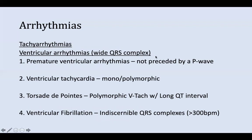Ventricular arrhythmias cause a wide QRS complex. We have four types. Premature ventricular arrhythmias are due to ectopic beats originating from a ventricular focus and are not preceded by a P wave. Ventricular tachycardia can be monomorphic or polymorphic — a type of polymorphic ventricular tachycardia is Torsades de Pointes, which is distinguished by a long QT interval. Finally, ventricular fibrillation has a completely indiscernible QRS complex and is characterized by more than 300 beats per minute.